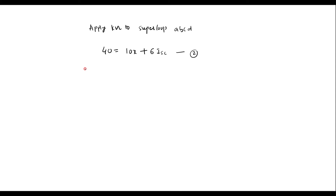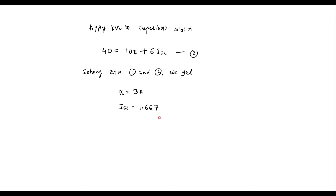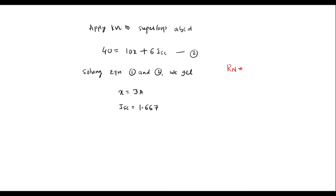Solving equations 1 and 2, we get X = 3 A and ISC = 1.667 A. Therefore Norton's resistance RN = VOC / ISC = 40 / 1.667, which gives RN = 24 ohms.